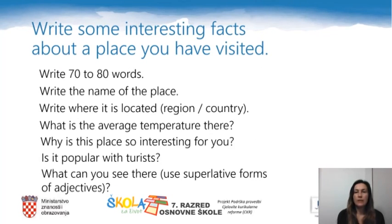Now it's time for your homework. You should write some interesting facts about a place you have visited. Write 70 to 80 words. Write the name of the place, where it is located — region and country — what the average temperature there is, why this place is so interesting for you, whether it is popular with tourists, and what you can see there. Don't forget to use superlative forms of adjectives.